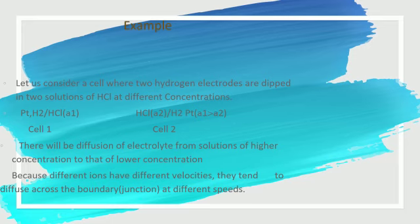We have activity A1 in the first compartment and A2 in the second. The activity coefficient is used to define the concentration of the electrolyte. If A1 concentration is greater than A2, there will be diffusion of the electrolyte from the solution of higher concentration to that of lower concentration.